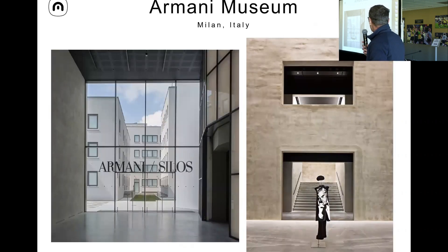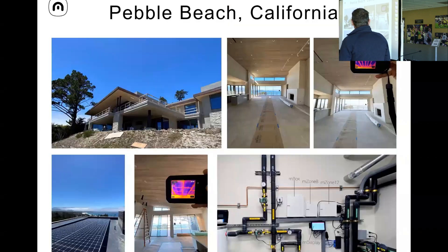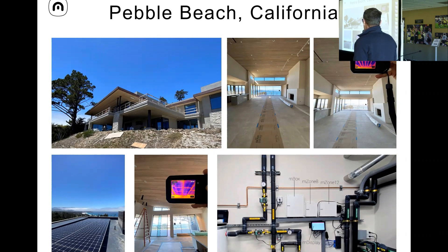Here are a few installation examples. This is the Armani Museum in Milan, Italy — you can see on the ceiling some tiles with radiant panels. This is a house at Pebble Beach with radiant cooling on a wood ceiling. Here is a mechanical room with the Messana M-Box, zoning modules, and the M-Display. Very typical in California is getting to net zero — putting a PV grid on the roof — and we do many installations controlling the heat pump and PV together.